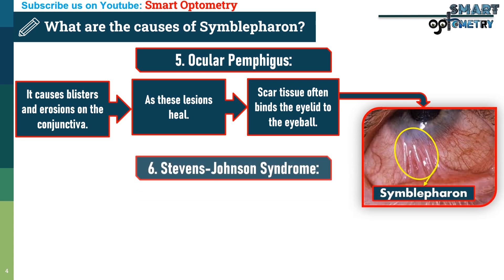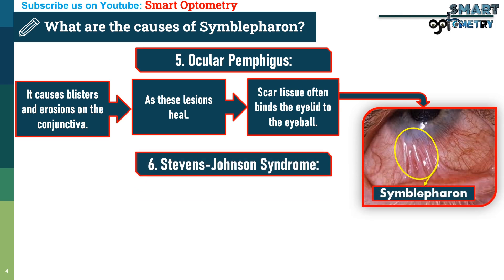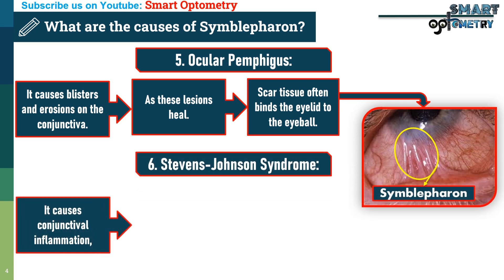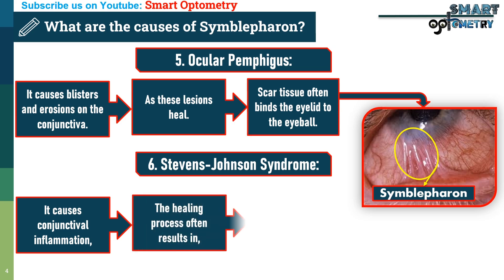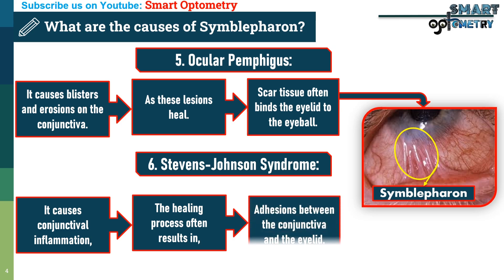6. Stevens-Johnson Syndrome: it causes widespread conjunctival inflammation, blistering, and raw surfaces. The healing process often results in adhesions between the conjunctiva and the eyelid.